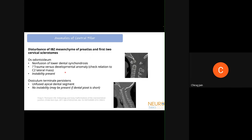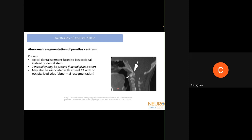Since the os is not attached to the C2 body, the TAL has nowhere to attach and instability is present. Ossiculum terminale persistence is an unfused apical dental segment — a very small segment not fused with the basal dens. Because the basal dens is still fused there is enough space for TAL attachment, so unless the dental pivot is short, there is usually no instability.